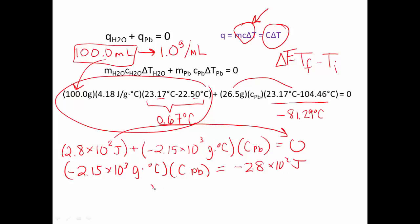So now we divide. Our C of Pb is equal to negative 2.8 × 10² joules divided by negative 2.15 × 10³ grams degrees Celsius.